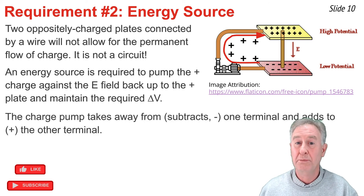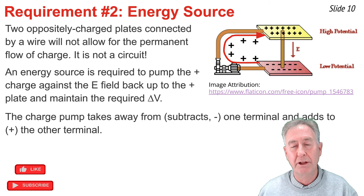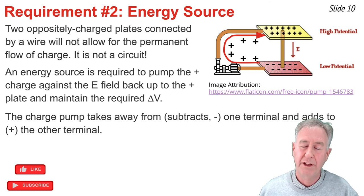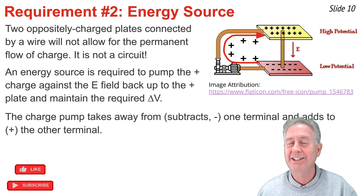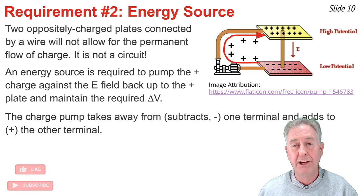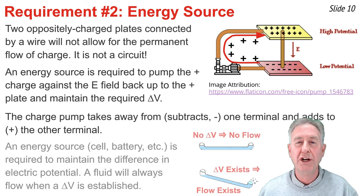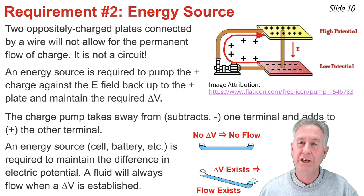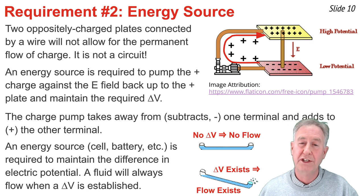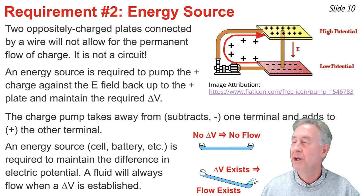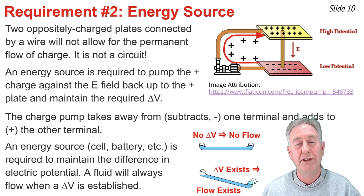What the energy source does is pump charge uphill from the negative terminal, against the electric field, up to the positive terminal. Using Ben Franklin's language, it takes charge away from one terminal and adds it to the other — that's the origin of the plus and minus for electric circuits. A charge pump is able to maintain a constant electric potential difference between the two terminals, and thus allow for charge flow. Without this difference in electric potential, there cannot be any flow, whether it's charge flow, water flow, or even roller coaster flow.